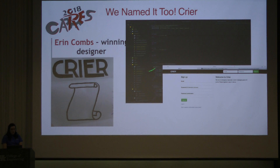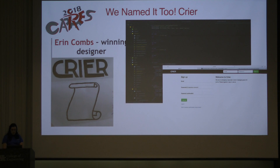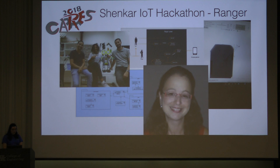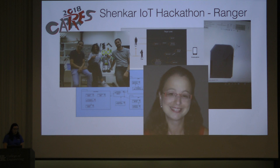We came up with a number of different artifacts, including a name and a winning logo — Crier — with Aaron winning that. The app is being developed in Rails. At the same time, we had a parallel hackathon in Haifa, Israel, where students at the Shankar Design College developed a tracker: a device a backpacker could carry that would detect fire, alert a ranger station, and help navigate them out of the forest.